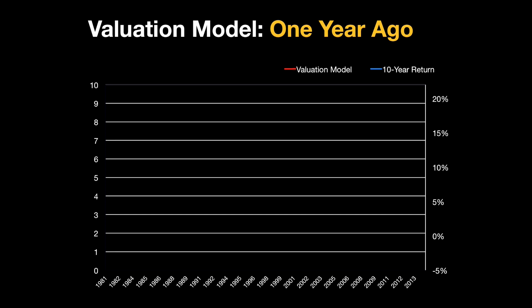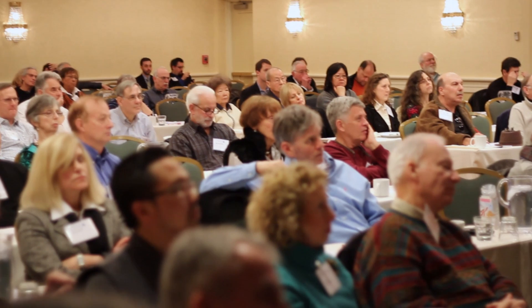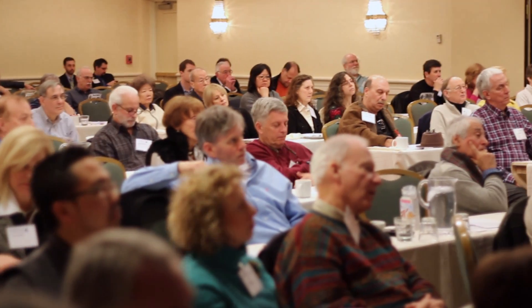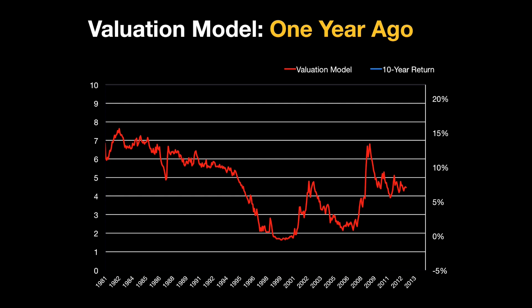Let's look at a line chart of the valuation model over time, starting with what it looked like a year ago. The red line is the valuation model, scored on a scale from 0 to 10, where a higher score represents a cheaper, more attractive valuation and a lower score represents a more expensive valuation — the line goes back to 1981. The blue line represents the S&P 500 annualized return over the following 10 years, and it stops in 2004: the value in 2004 tells us the return over the following 10 years.